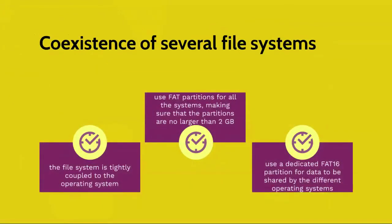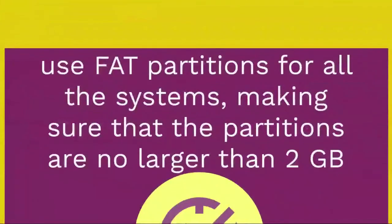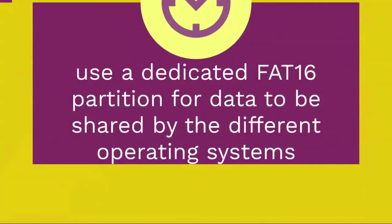Coexistence of several file systems. When several operating systems coexist on the same machine, the problem of choosing a file system is at its worst, since the file system is tightly coupled to the operating system. When there are several operating systems, you must choose a file system for each, bearing in mind that data from one operating system may be accessed from another. One solution would be to use FAT partitions for all systems, making sure that the partitions are no larger than 2 GB.